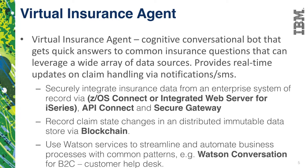Behind the scenes, we're going to leverage mainframe data residing on ZOS through a product called ZOS Connect. ZOS Connect enables us to build raw RESTful APIs that can be accessed from any environment. Once we have those APIs, we'll use API Connect and Secure Gateway to generate secure public interfaces that enable us to access those RESTful APIs on the mainframe and collect the data we're looking for.